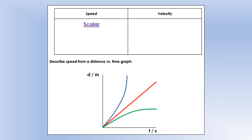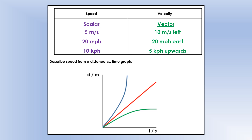Speed is a scalar — we give it a value like meters per second or miles per hour. Velocity is very similar but includes direction, for example 10 meters per second left or 20 miles per hour east. We can also describe different distance versus time graphs: an increasing gradient means increasing speed; a constant gradient means constant speed; and a decreasing gradient means decreasing speed.